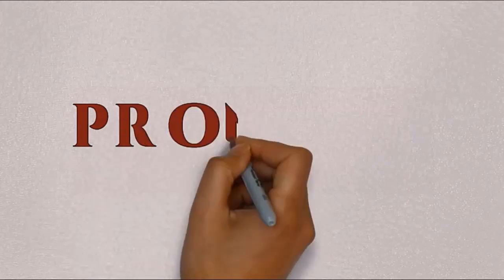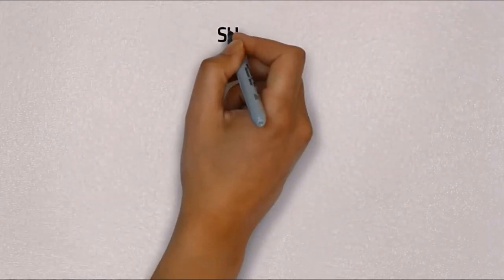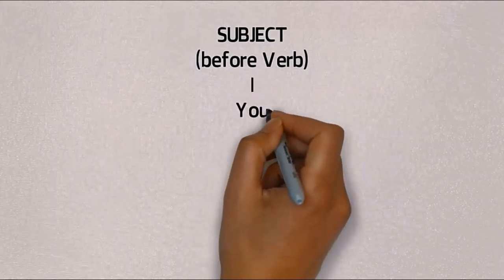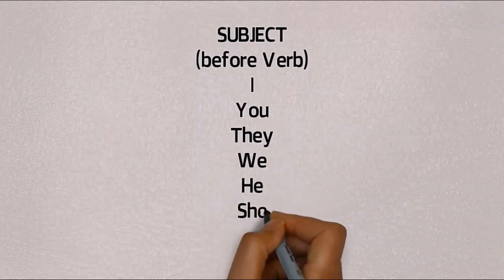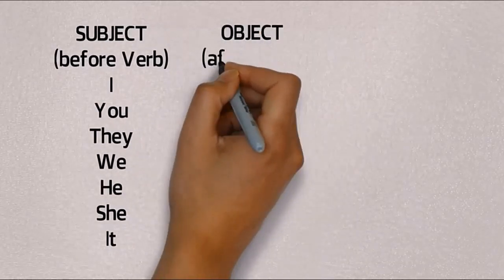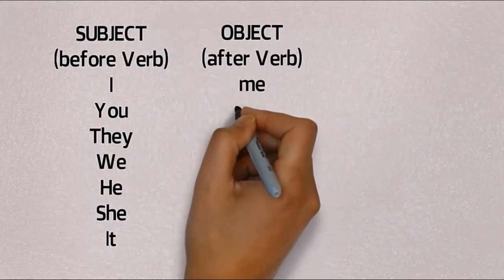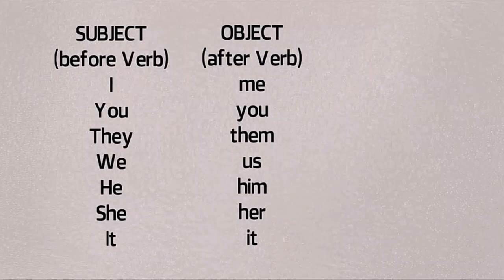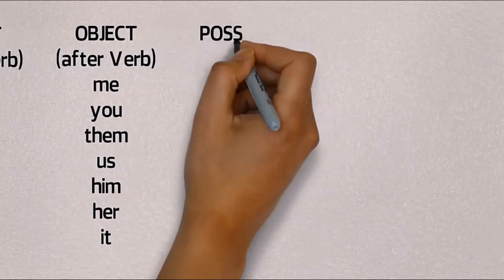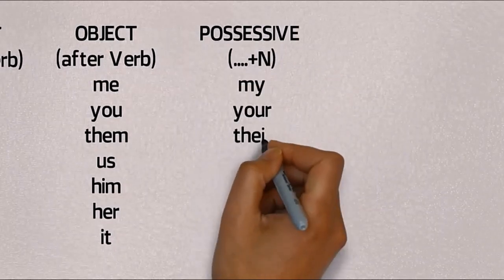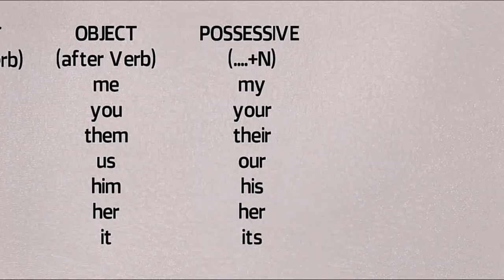Now let's talk about pronouns, or kata ganti. Pronouns are used to replace nouns. There are three types we'll learn today. First is subject pronoun - positioned before the verb, used at the beginning of sentences: I, you, they, we, he, she, it. Next is object pronoun - if subject comes before verb, object comes after verb: me, you, them, us, him, her, it. Last is possessive pronoun, showing ownership, must be followed by a noun: my book, your friend, their house, our test.